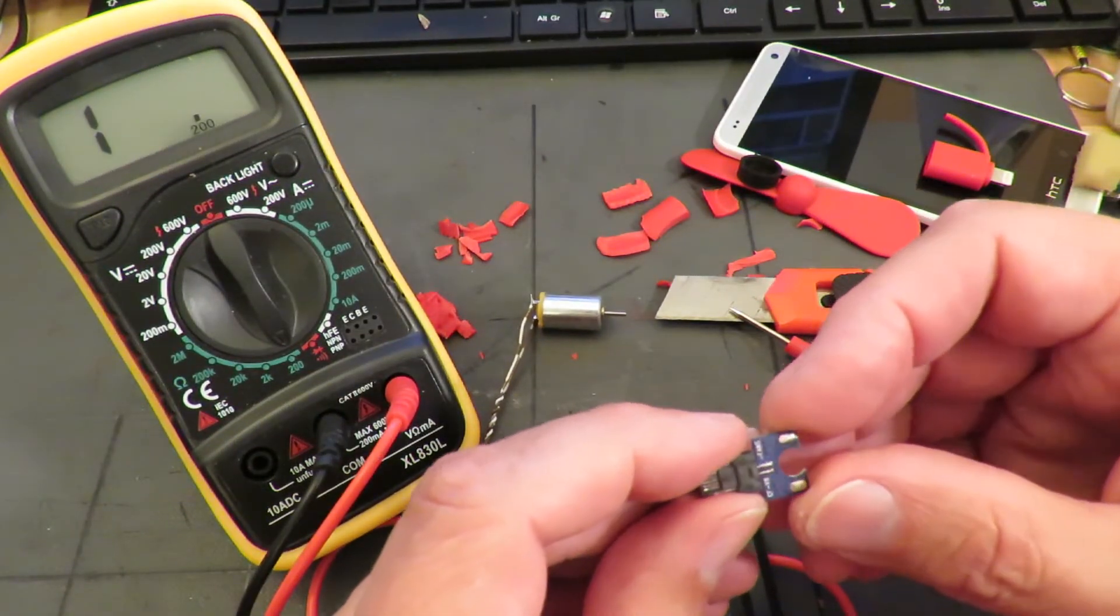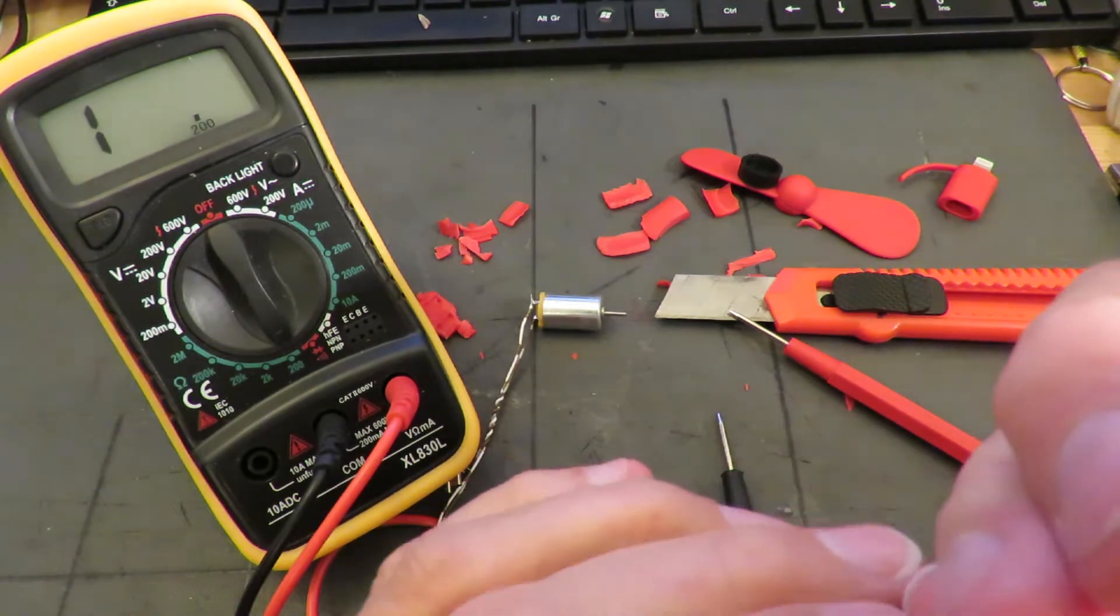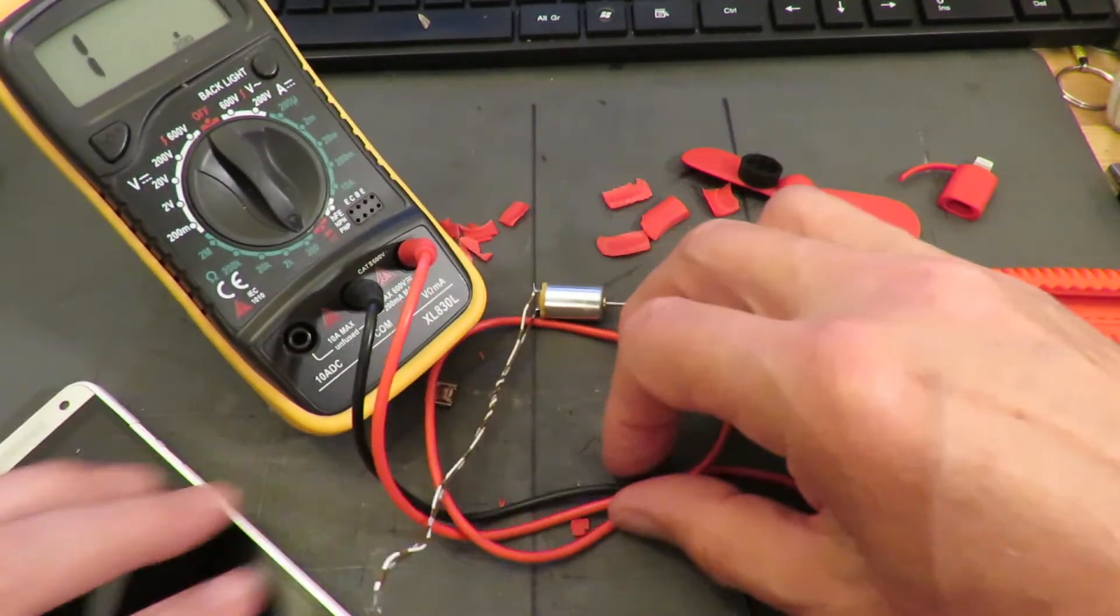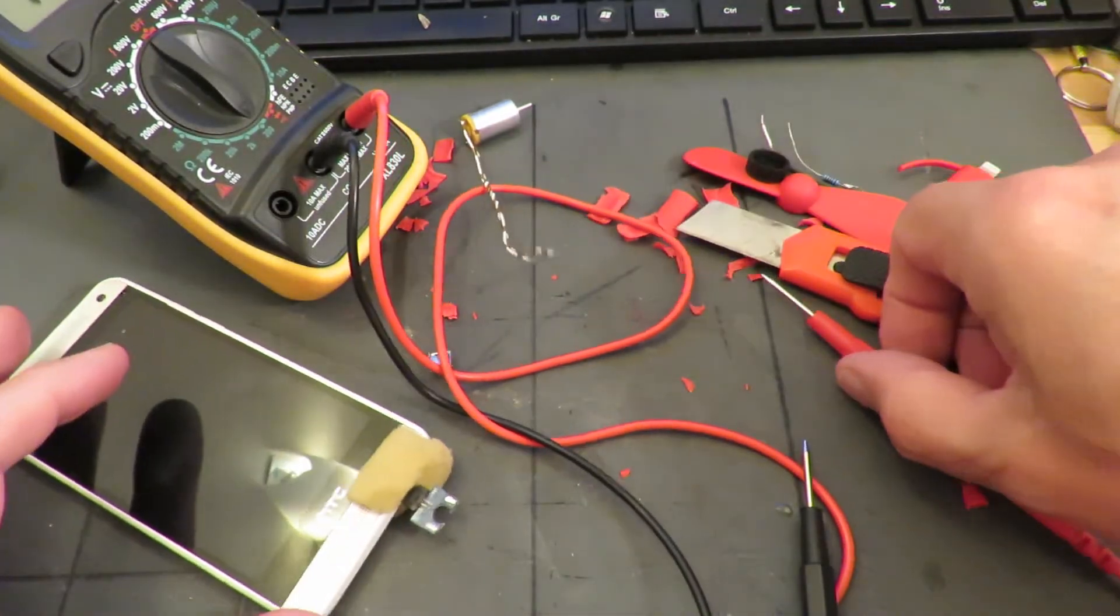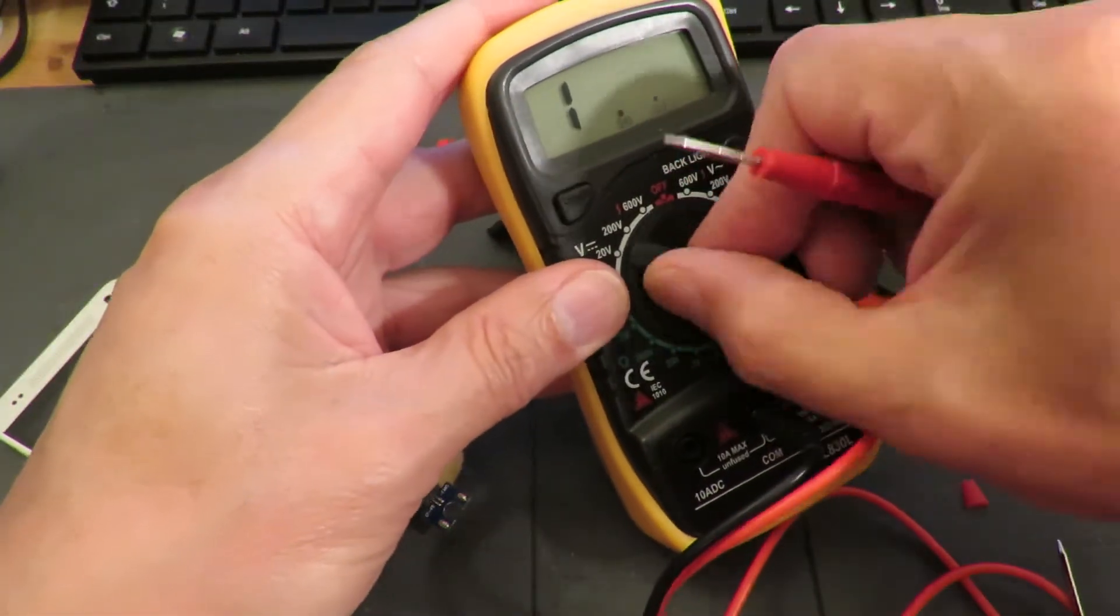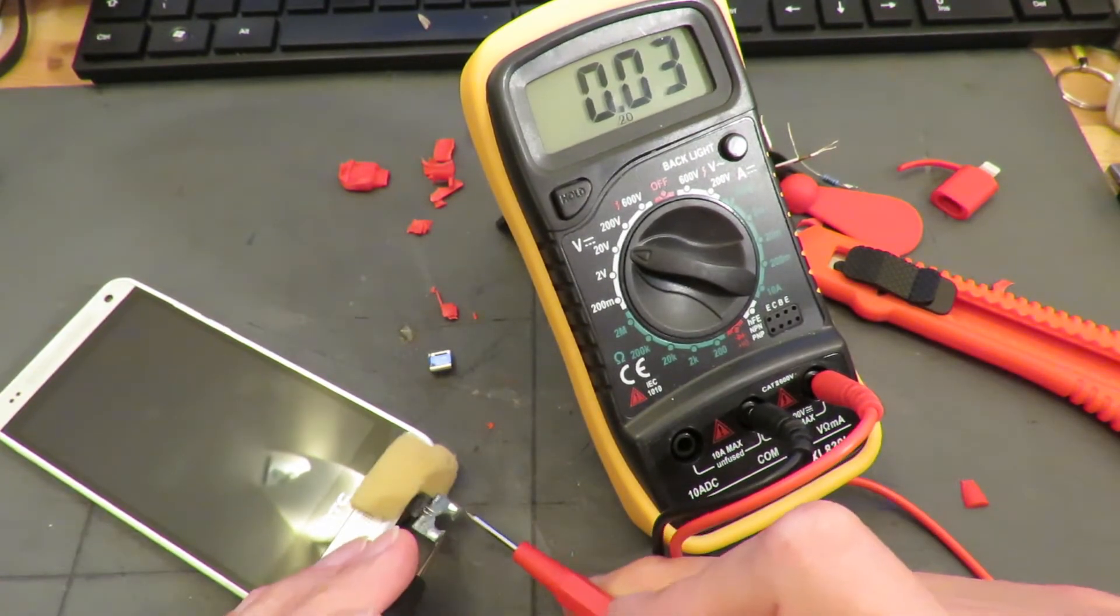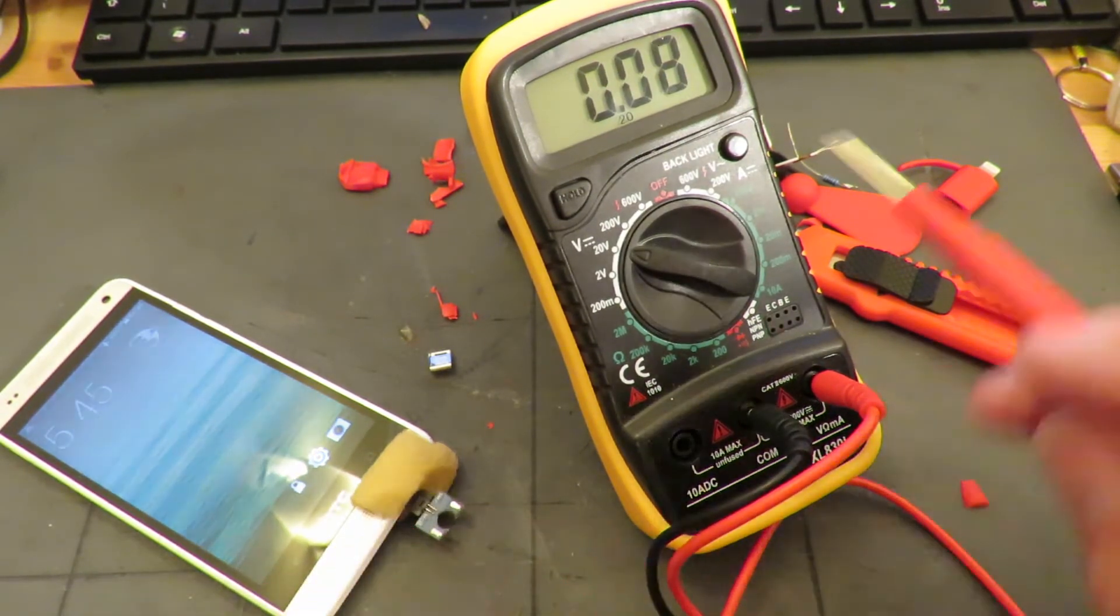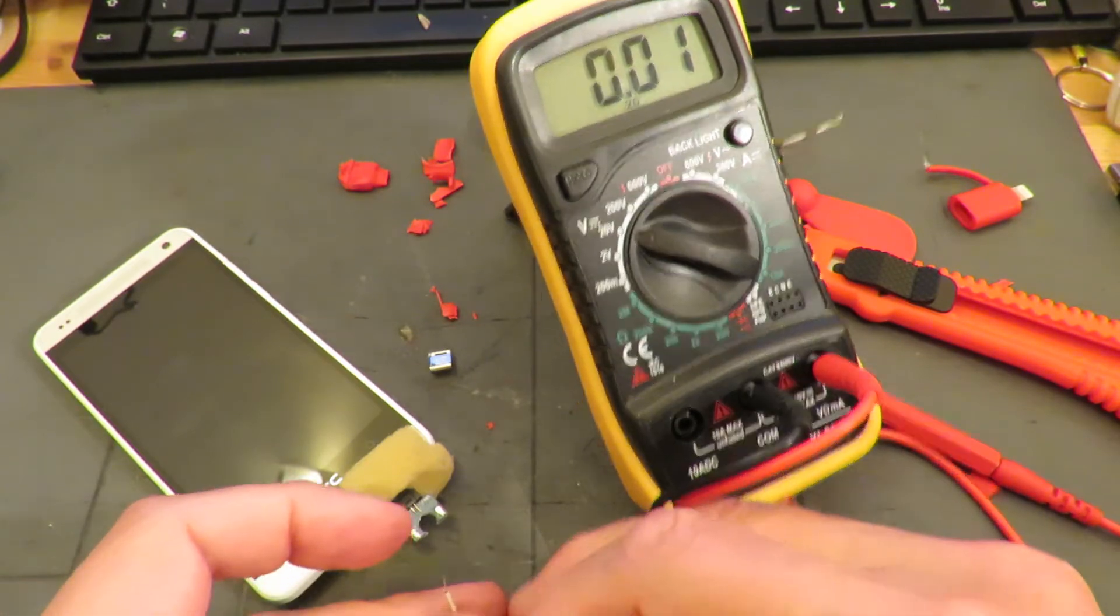Right, one of the questions I did have was could we run an LED off it. What we could do is measure the voltage coming out, couldn't we? Five volts. Can we run an LED off it? Why you would want to, I don't know, but...